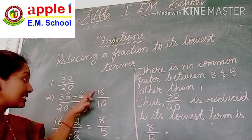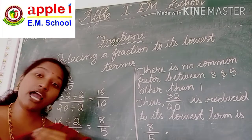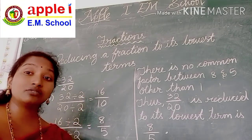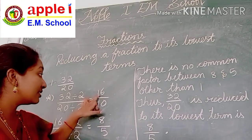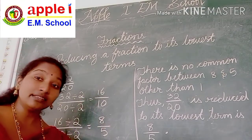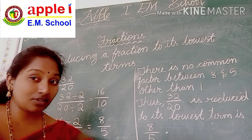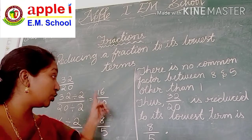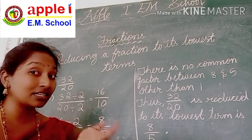And see — 16 by 10. Again you have to check whether these two numbers will come in any same table or not. 16 is an even number, and again these two numbers will come in the 2 times table. So again you can divide both numerator and denominator by 2.